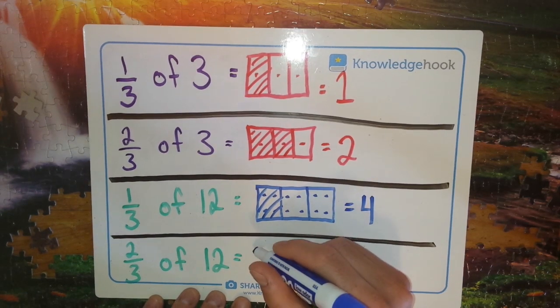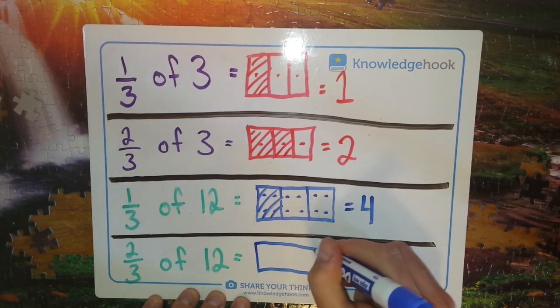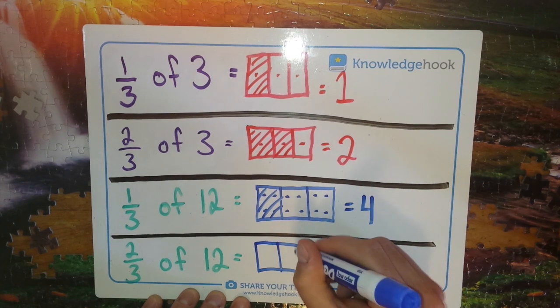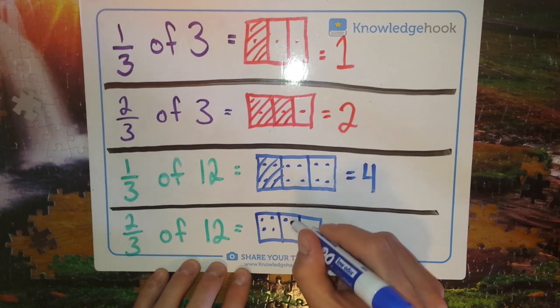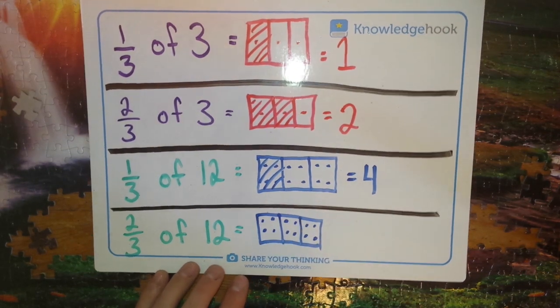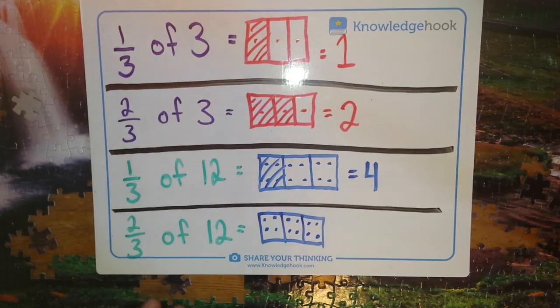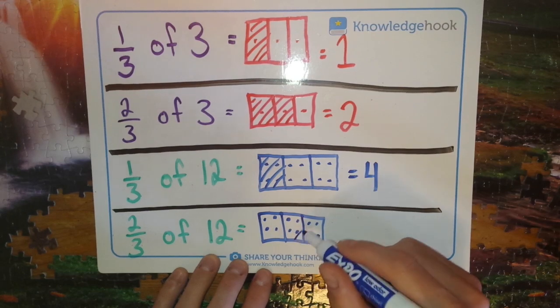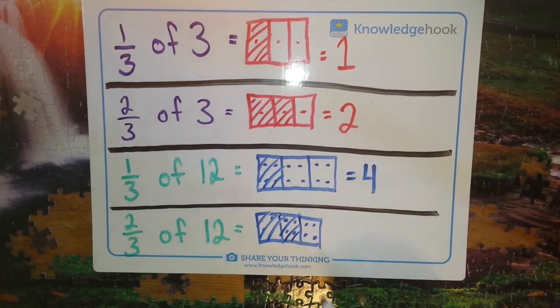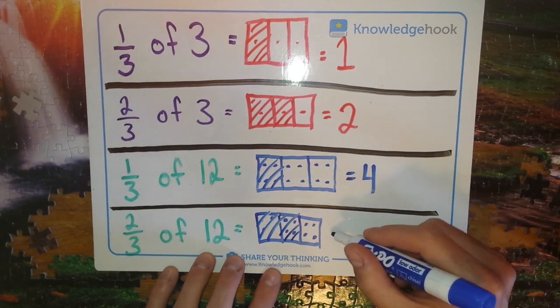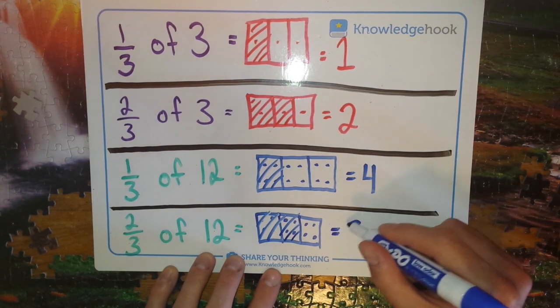So now I can use the exact same idea to figure out two thirds. Picture - we'll just fill that up - but this time instead of one third I have two thirds, so let's highlight two thirds. Even though I've smudged out some of my dots there, I know that four and four more is eight, so two thirds of twelve is equal to eight.